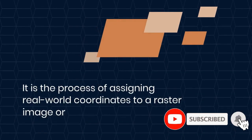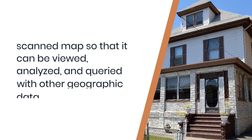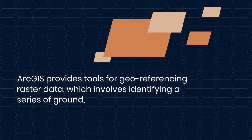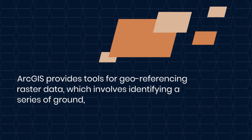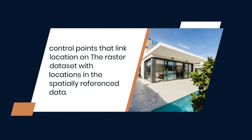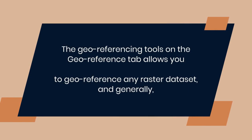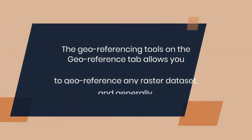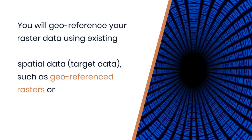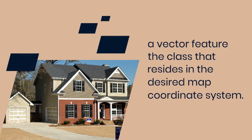Georeferencing is the process of assigning real-world coordinates to a raster image or scanned map so that it can be viewed, analyzed, and queried with other geographic data. ArcGIS provides tools for georeferencing raster data, which involves identifying a series of ground control points that link locations on the raster dataset with locations in the spatially referenced data. The georeferencing tools on the Georeference tab allow you to georeference any raster dataset using existing spatial data, such as georeferenced rasters or a vector feature class that resides in the desired map coordinate system.